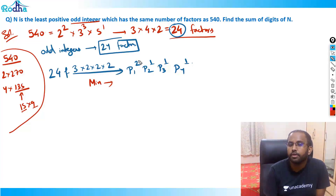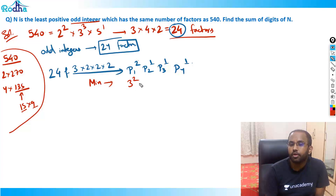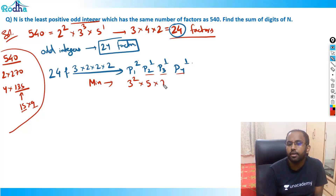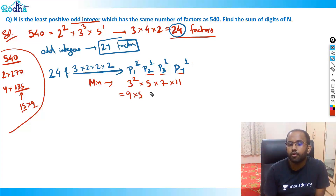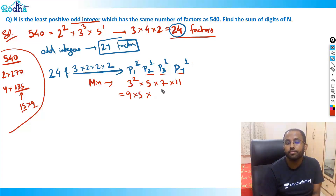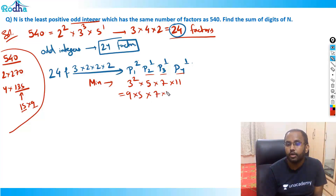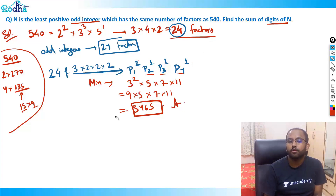The prime with the highest power gets the smallest odd prime, which is 3 — so 3 squared. The other primes get power 1 each, and I assign them the next smallest odd primes: 5, 7, and 11. So N = 3² × 5 × 7 × 11 = 9 × 5 × 7 × 11 = 45 × 7 × 11 = 315 × 11 = 3465. The sum of digits is 3 + 4 + 6 + 5 = 18. So 18 is the answer.